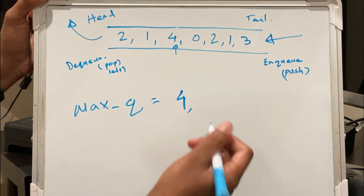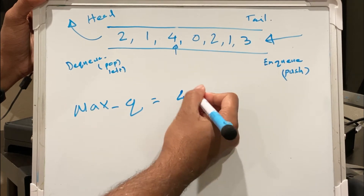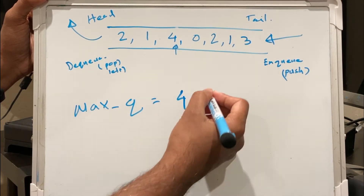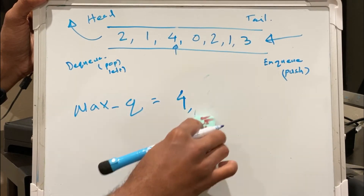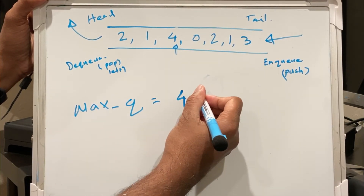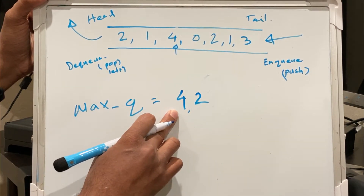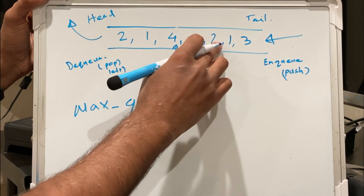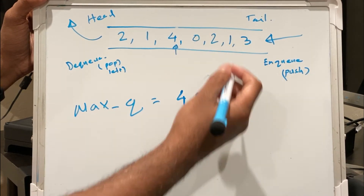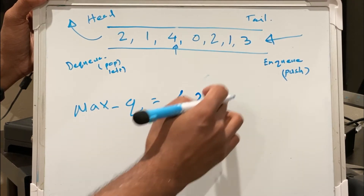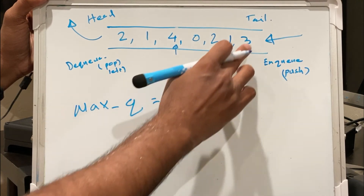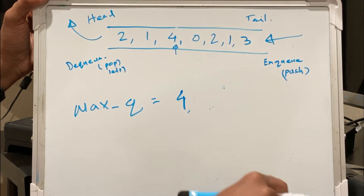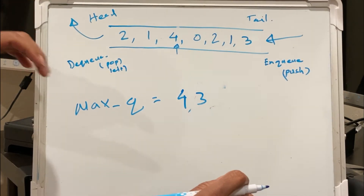Then 0 comes — 0 is not greater than 4, so we keep 0 in max_q. Then 2 comes — 2 is greater than 0, so we pop 0 and keep 2. But 2 cannot replace 4, so max_q is [4, 2]. Then 1 comes — 1 is less than 2, so we keep 1. Then 3 comes — 3 can replace 1 and 2, but not 4, so we remove 1 and 2 and add 3. Max_q becomes [4, 3]. That's how we handle enqueue operations.